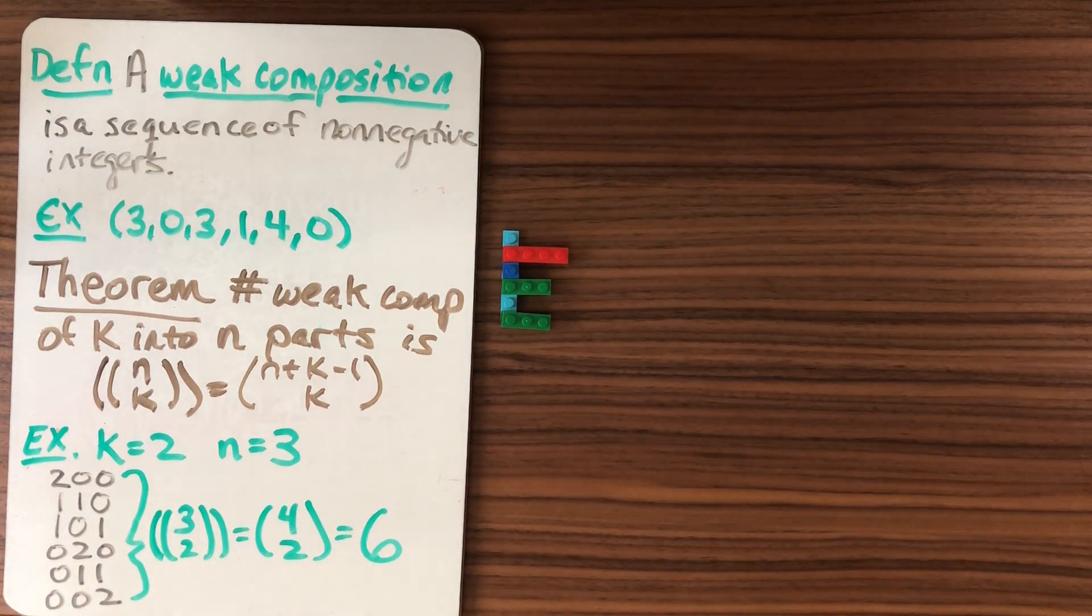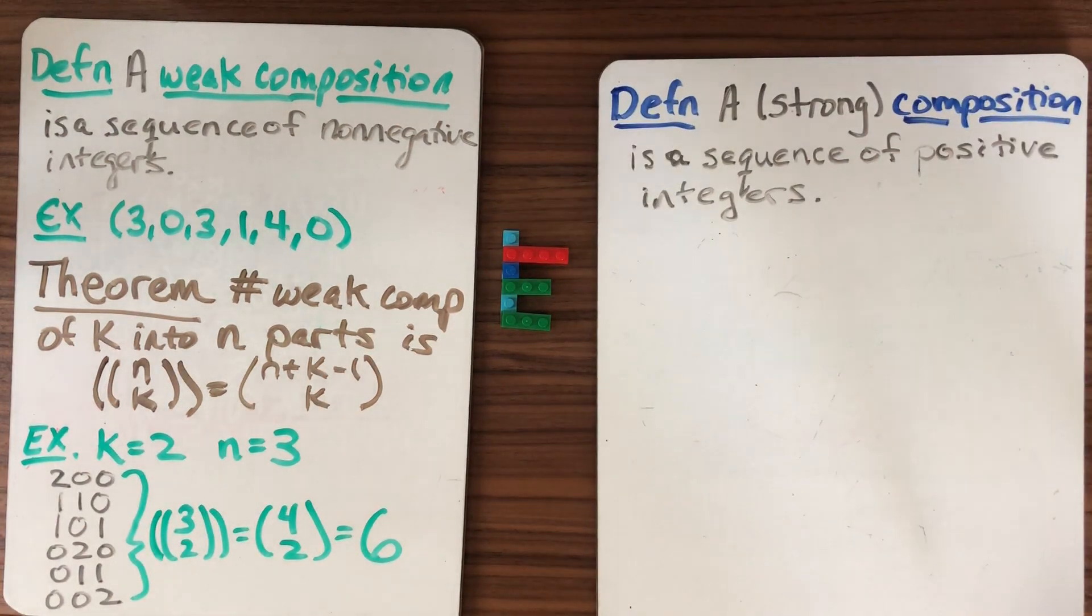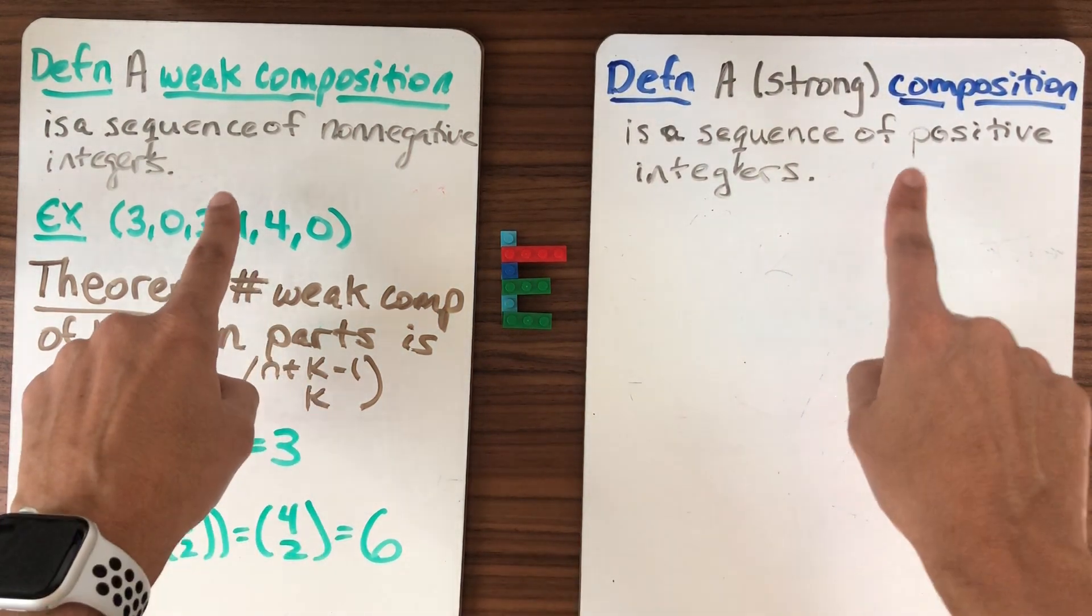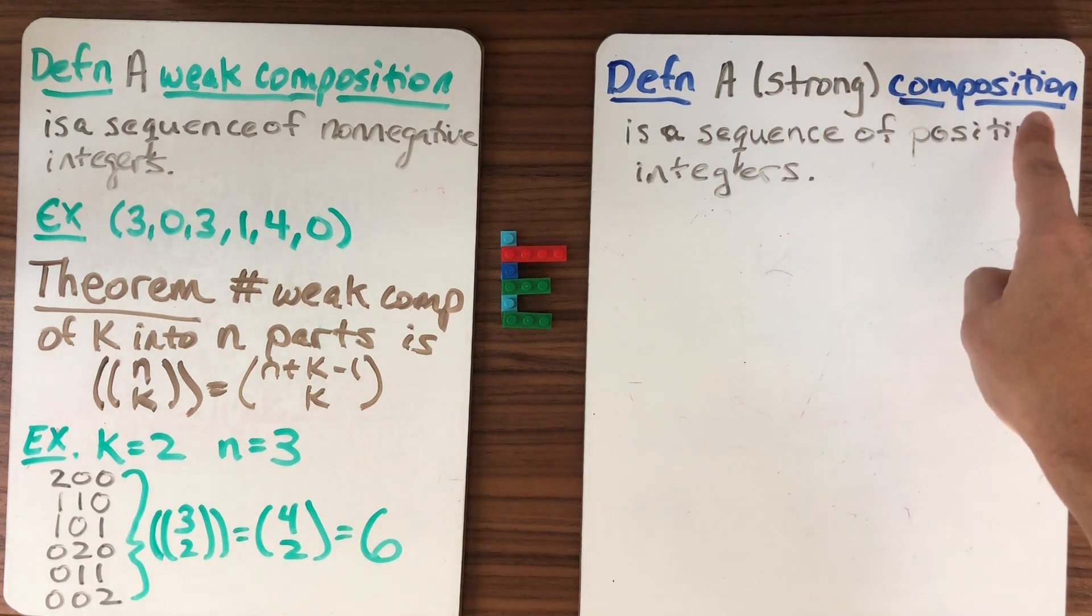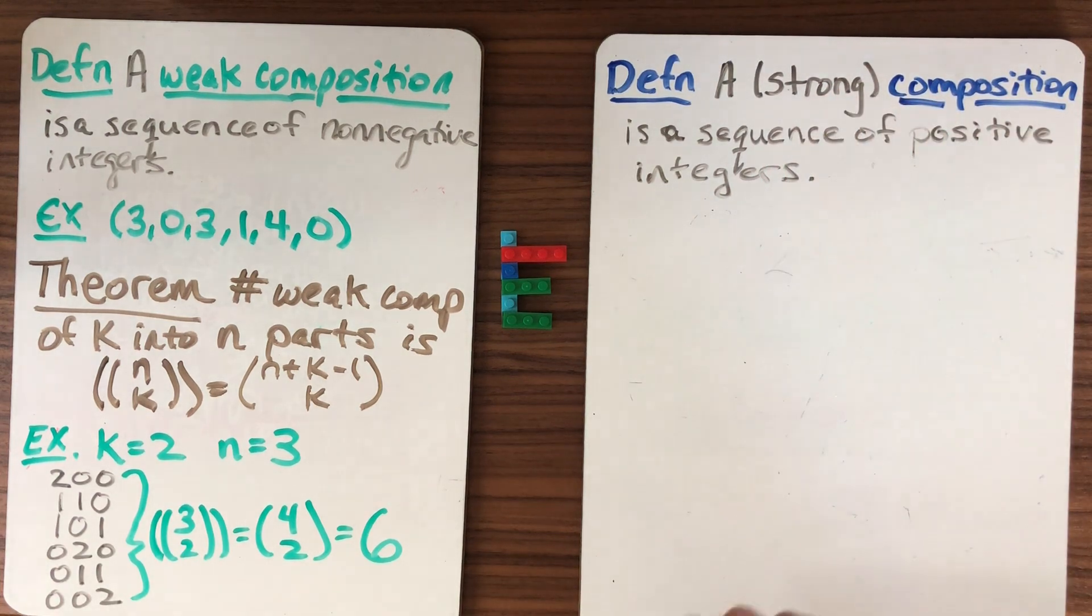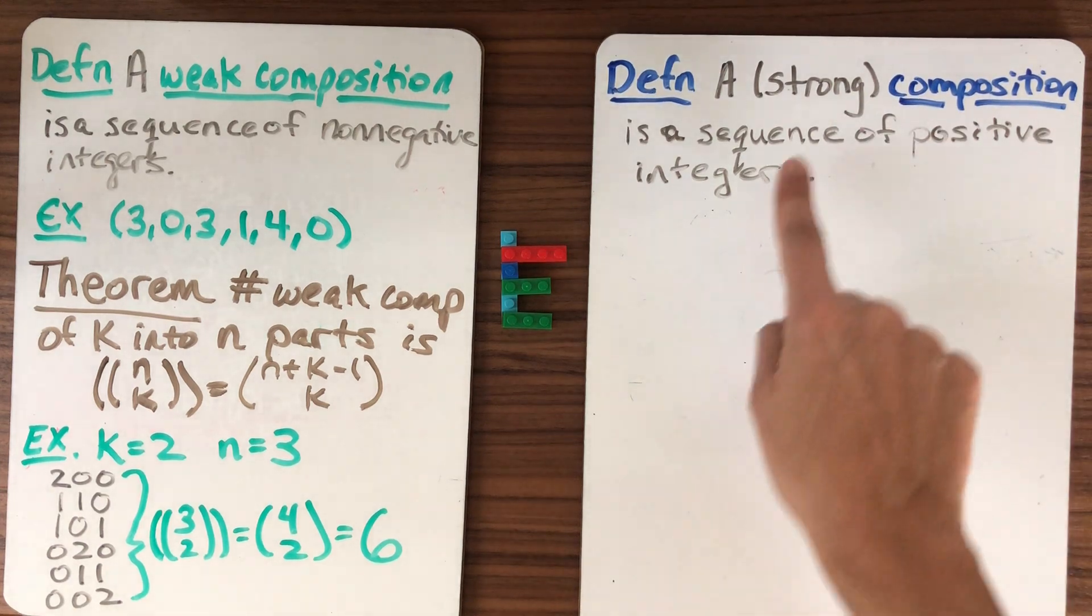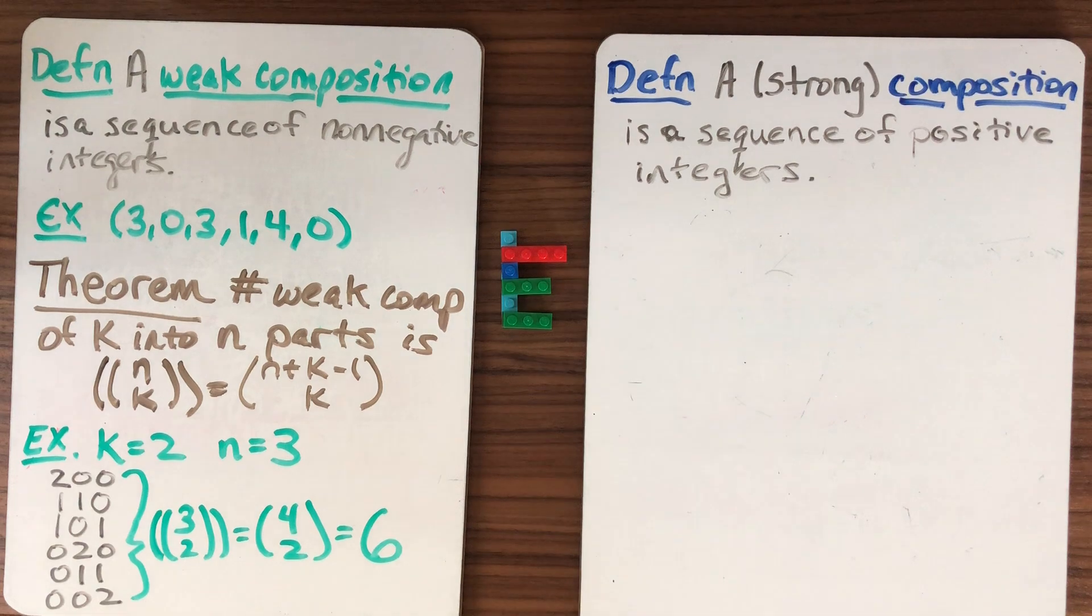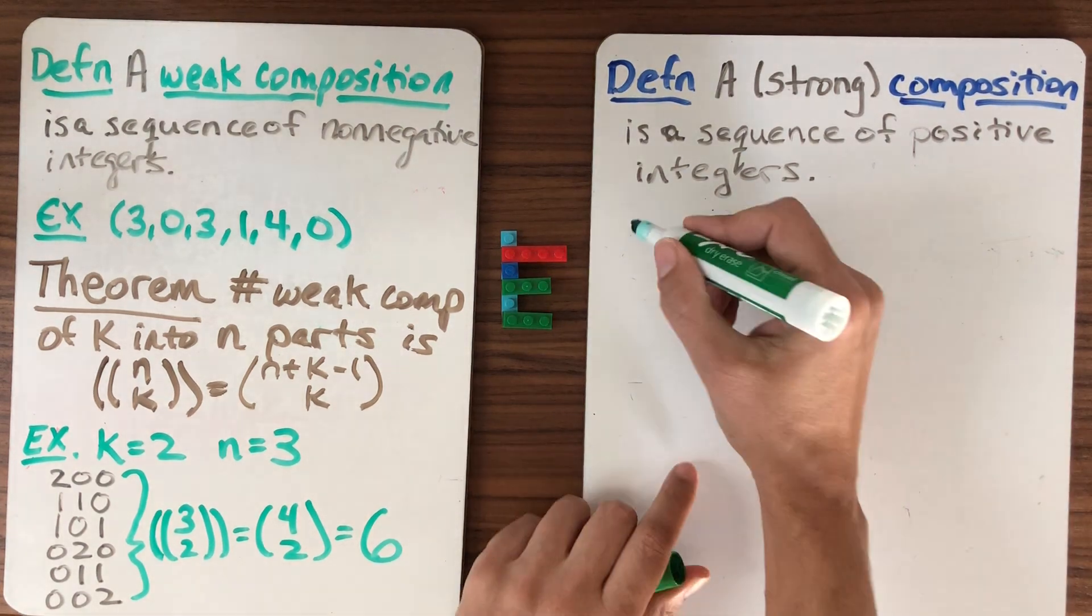So let's look at one of the other types that we're going to study. That will be a strong composition. So a strong composition looks much like a weak. Often we just call it a composition, and we don't use the word strong, but I just wanted to contrast it with weak. So what is a composition? It's a sequence of positive integers. So this isn't going to count. This isn't going to be a strong composition because I have zeros.